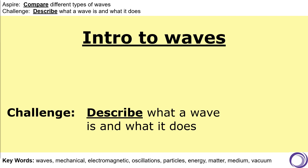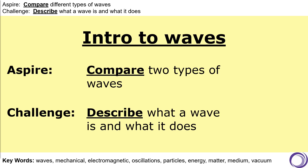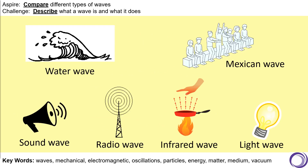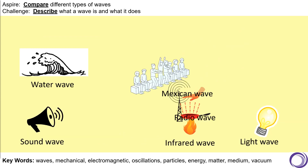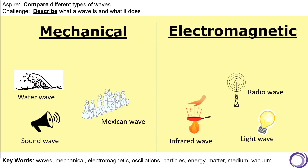You should now be more confident with how to describe what a wave is and what it does. You should be able to tell me that waves are produced by oscillations, that they transfer energy, but without transferring matter. In the second part of this lesson, we're now going to look at what the two types of waves are and how we can compare them. At the beginning of this lesson we looked at several examples of waves — now all of these can actually be separated into two types: mechanical waves and electromagnetic waves.